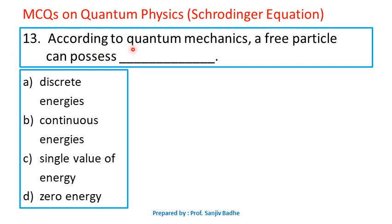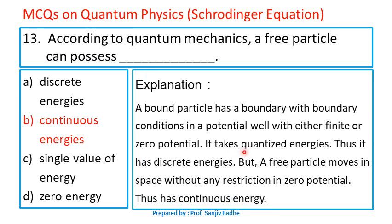Question number 13. According to quantum mechanics, a free particle can possess — options are discrete energies, continuous energies, a single value of energy, or zero energy. A particle in a potential well has boundary conditions with finite or zero potential, giving it quantized and therefore discrete energies. But a free particle moves in space without any restriction in zero potential, so such a free particle will have continuous energies. Option B is correct.